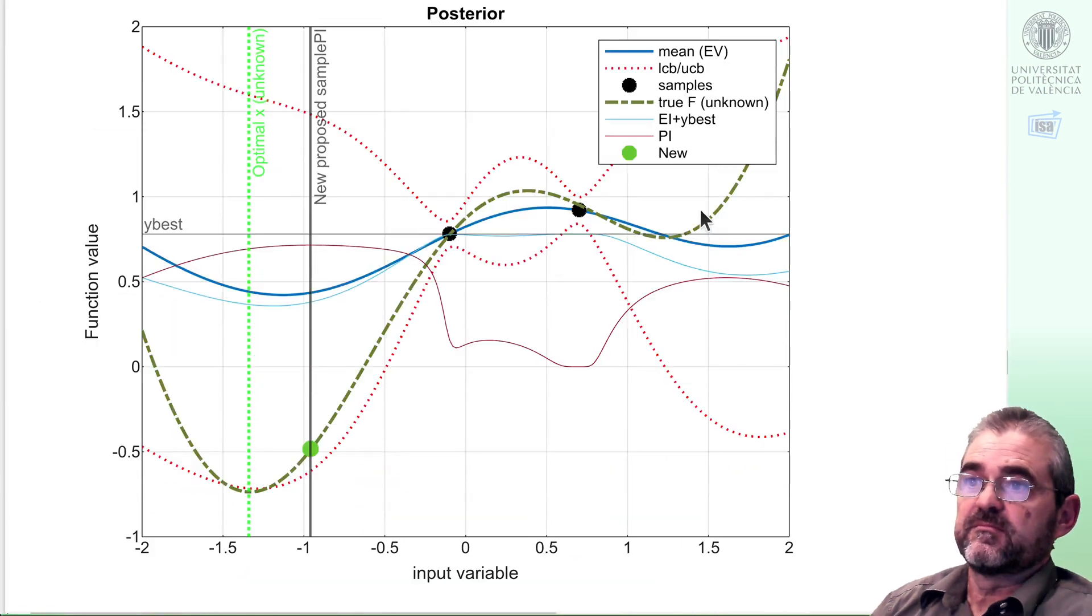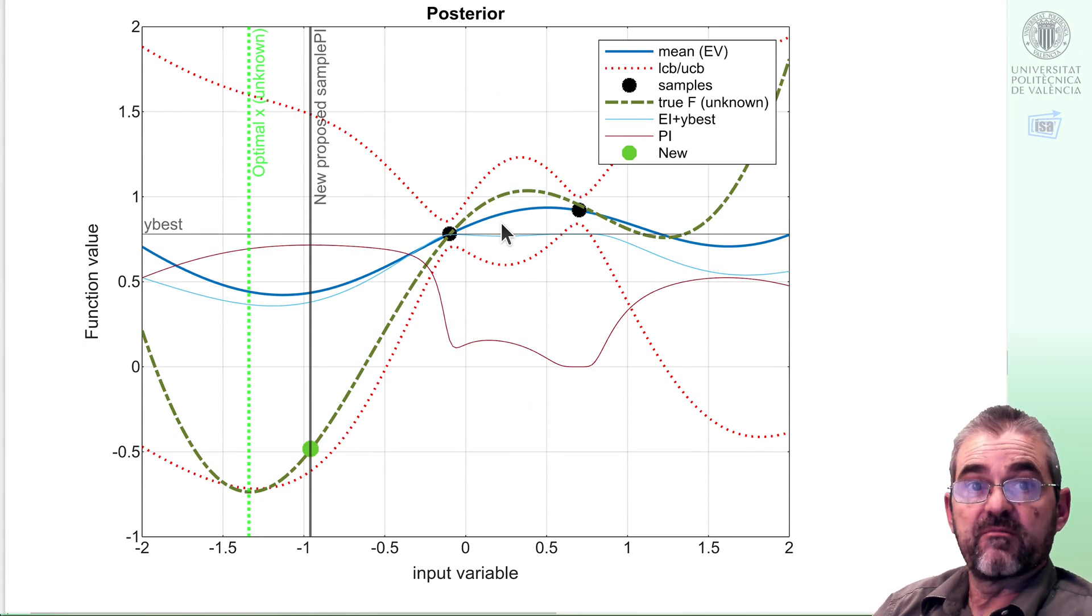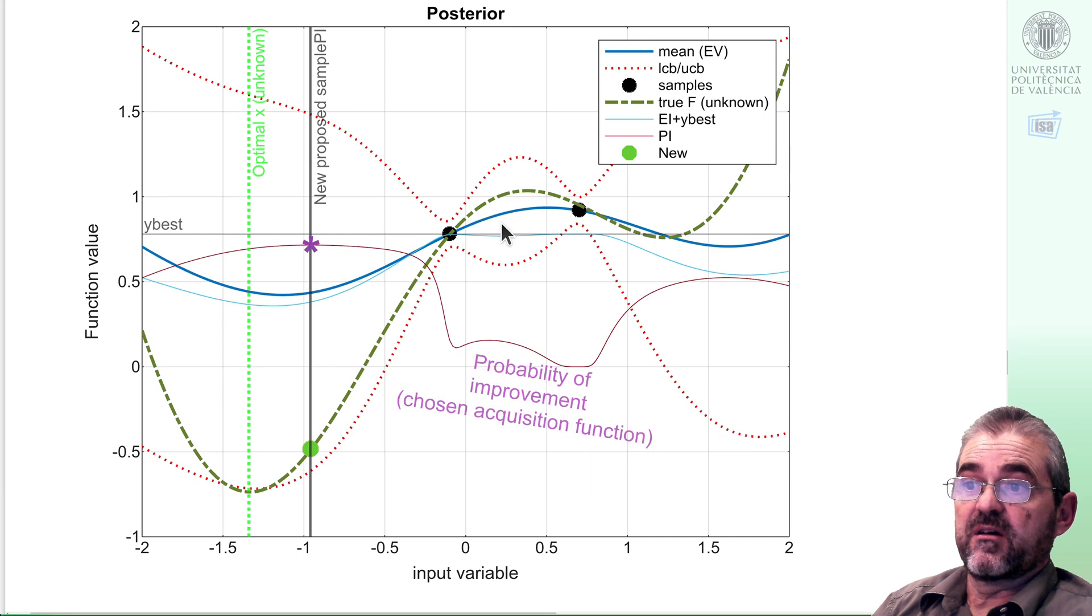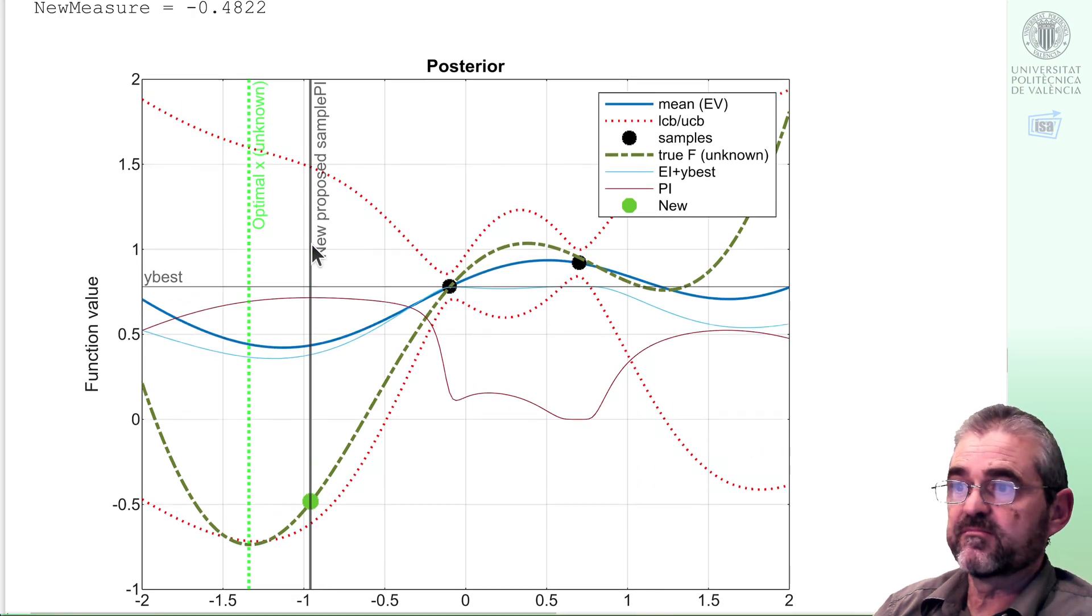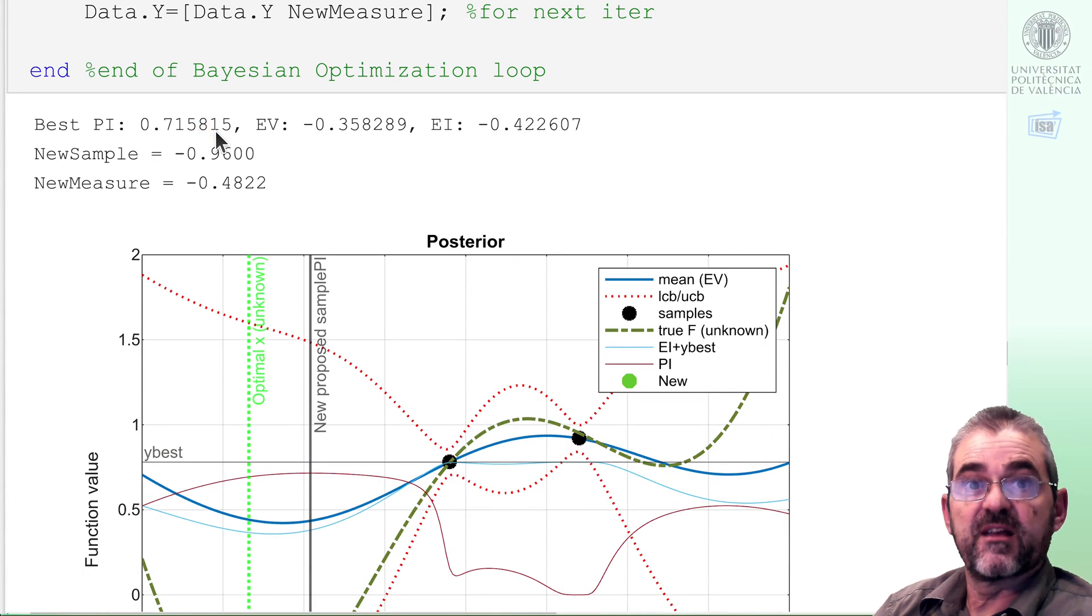In this case this is my first iteration with these black true samples and the posterior has the blue mean, the red confidence intervals. The pink line here is the one with the probability of improvement, so this is the point with largest probability of improvement and then that abscissa is what the acquisition function suggests and my new sample is the green dot.